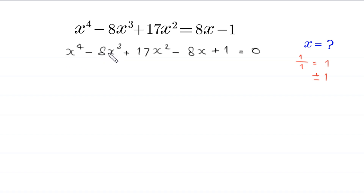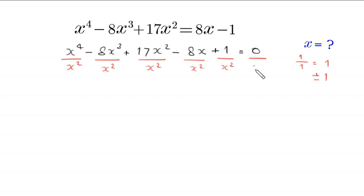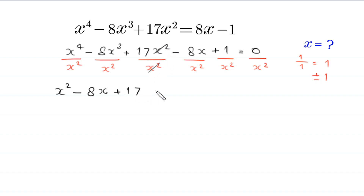So let us use another trick. We divide the whole equation by x squared — we divide each term by x squared: 8x cubed divided by x squared, 17x squared divided by x squared, negative 8x divided by x squared, and 1 divided by x squared, all equal to 0. Now, x to the power 4 divided by x squared becomes x squared, minus 8x cubed divided by x squared becomes 8x, and we are left with 17 minus 8 over x plus 1 over x squared, equal to 0.